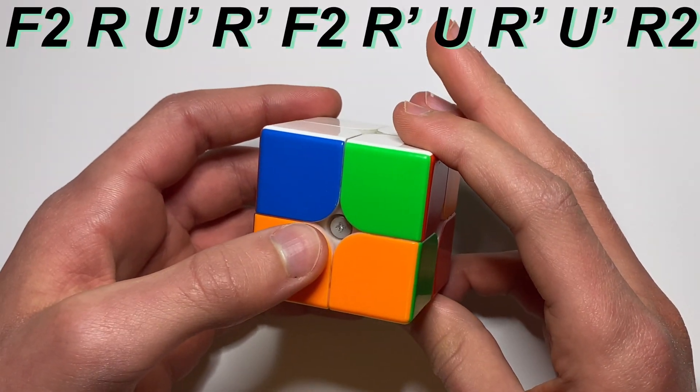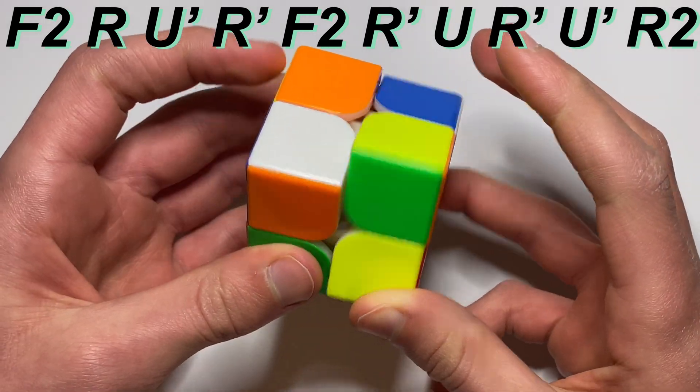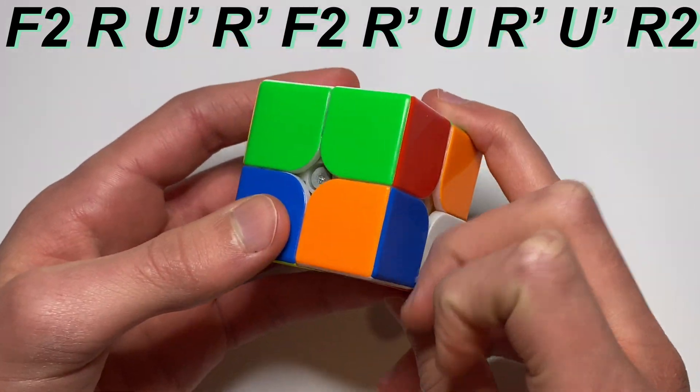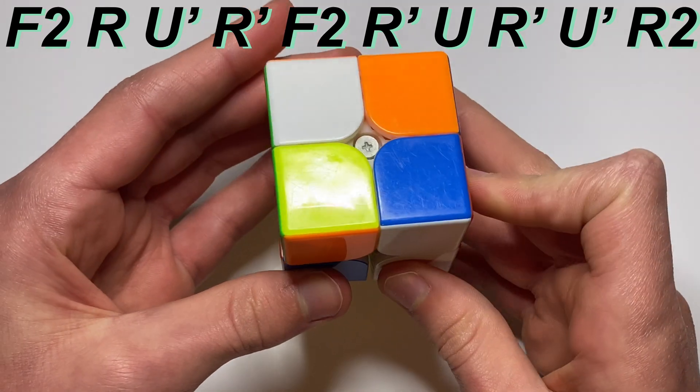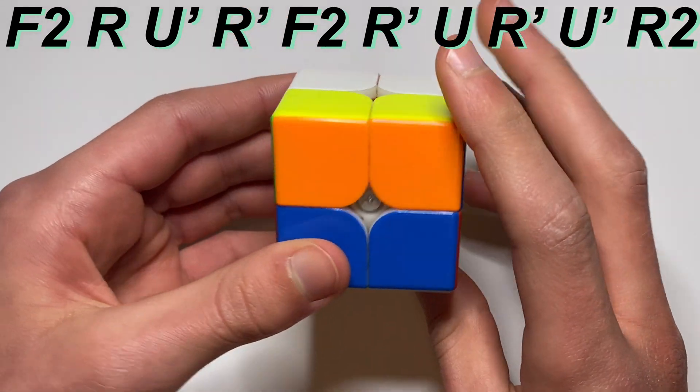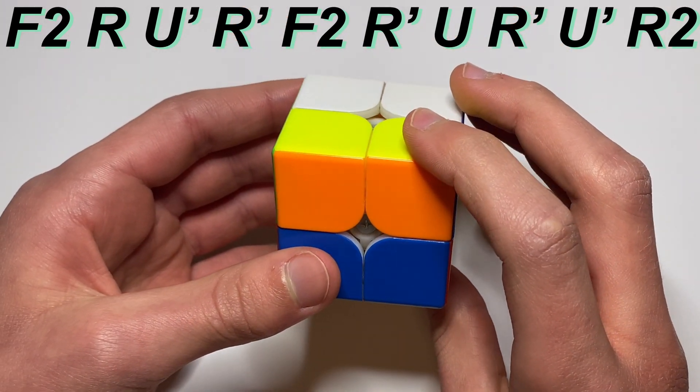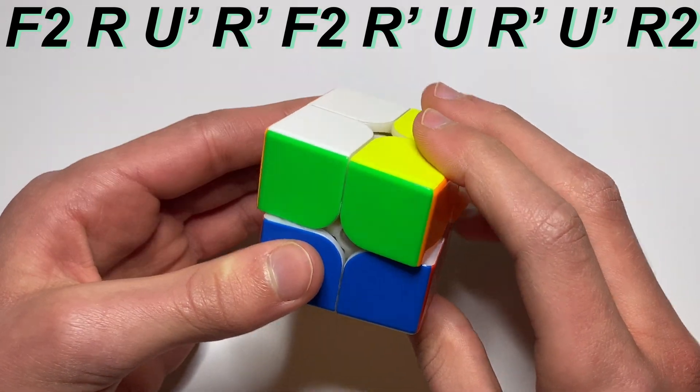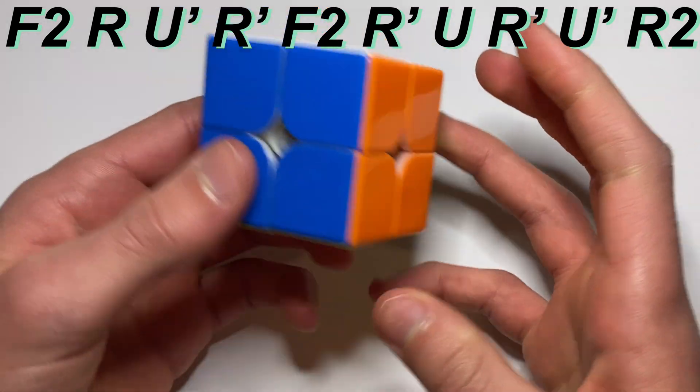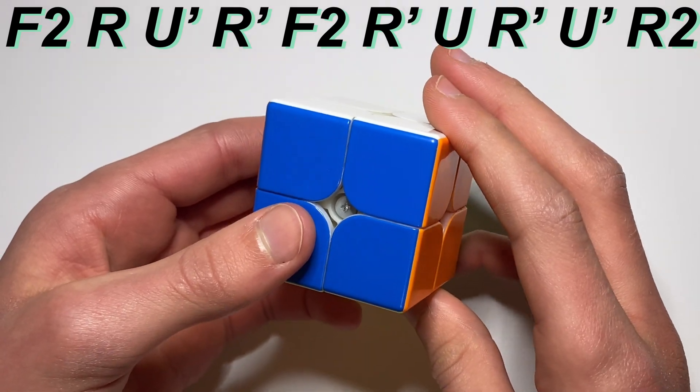So first what you do is you start off with an F2, just like that. Then you do the algorithm, then you do your F2 again, then you finish the algorithm. But then right before you end what you need to do is you need to do a U prime, then you do R2, then you do a U F just like that. So a bit quicker it would go like this.